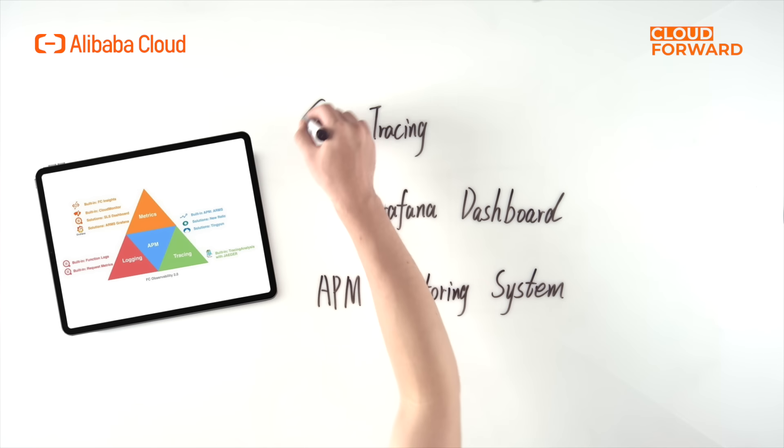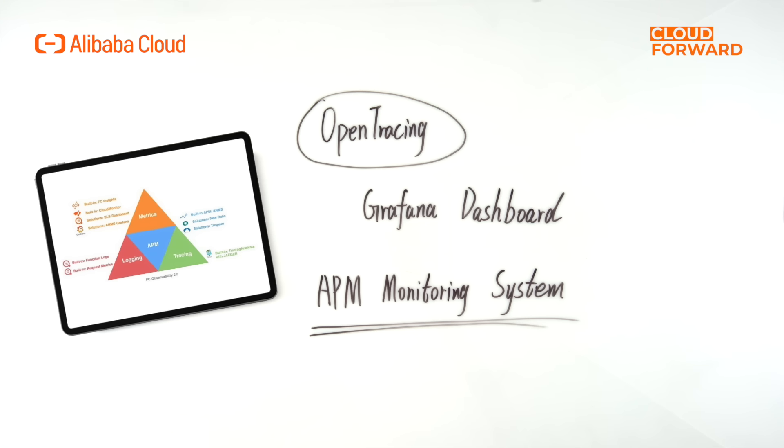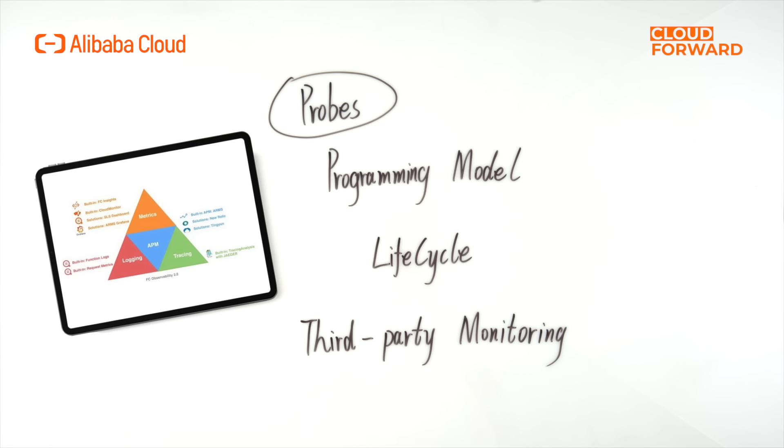In order to be compatible with developers' existing experiences, Alibaba Cloud actively embraces open source, integrates with OpenTracing, supports Grafana dashboards, and supports third-party monitoring platforms, achieving code integration with APM monitoring systems with almost zero modifications. To support traditional developers' observability experience and enable the installation of probes, Alibaba Cloud has expanded its programming module to support function lifecycle, providing the possibility of integrating with third-party monitoring. Function Compute also supports open-source observability capabilities and integrates with Jaeger to support Grafana dashboards, and supports integration with third-party monitoring platforms such as New Relic with very minimal changes.